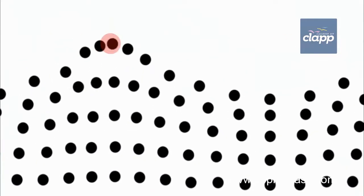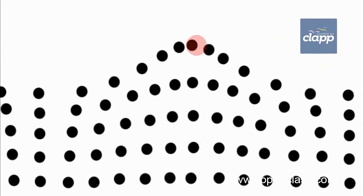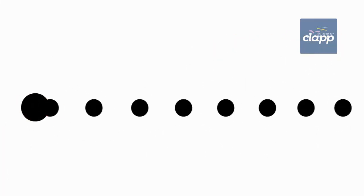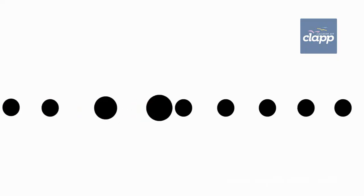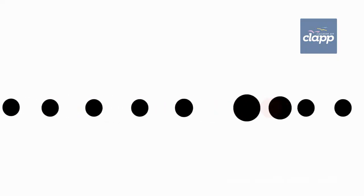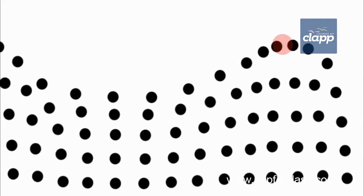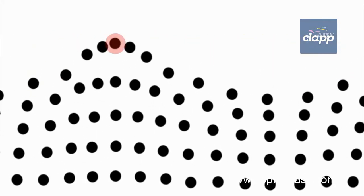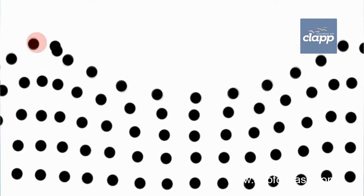When still water is disturbed, the particles of water begin to vibrate about their mean position at the point of disturbance. These particles collide with the neighboring particles and impart some of their energy to their neighboring particles. As a result of this, the neighboring particles start vibrating about their mean position.